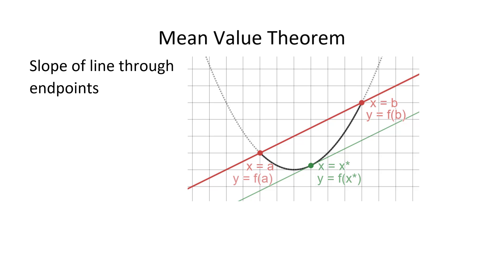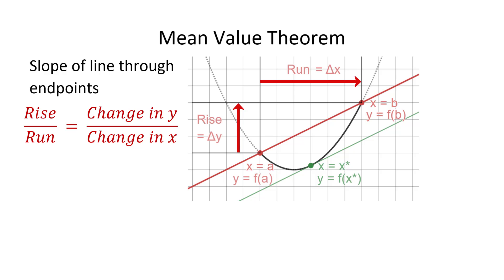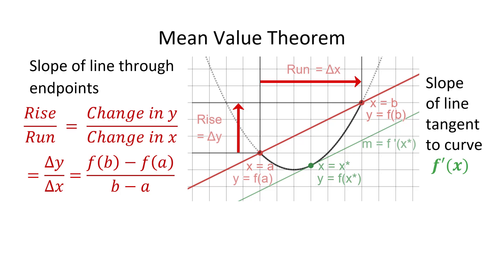To put that in symbols, the slope of the line through the two endpoints is rise over run, which is change in y over change in x. We often use the Greek letter delta to represent a change or a difference, so we can write change in y over change in x as delta y over delta x. We can calculate that by subtracting the y values at the two ends and dividing by the difference between the x values at the two ends. The slope of the tangent line is the derivative of the function f, which we write f prime of x.